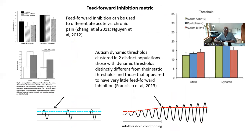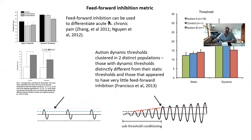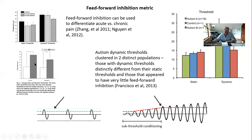What can you learn from the feed forward inhibition metric? Some of what we learned over 10 years ago still holds true: there's a difference between acute and chronic pain. With chronic pain, the difference between static and dynamic threshold goes down. That smaller difference between static and dynamic threshold was also seen when comparing migraine versus healthy controls.